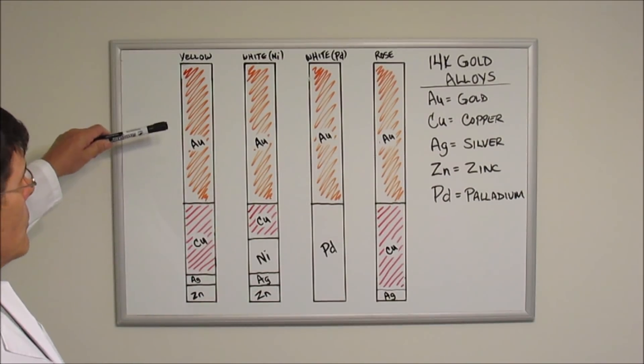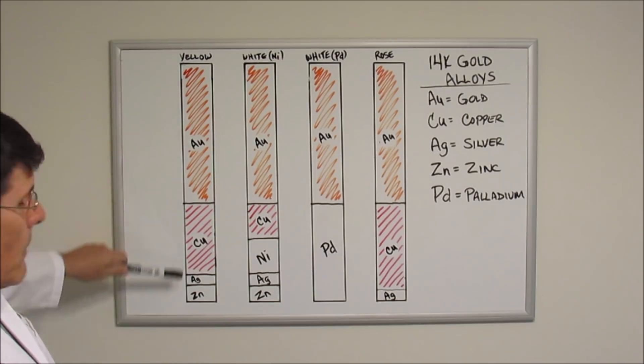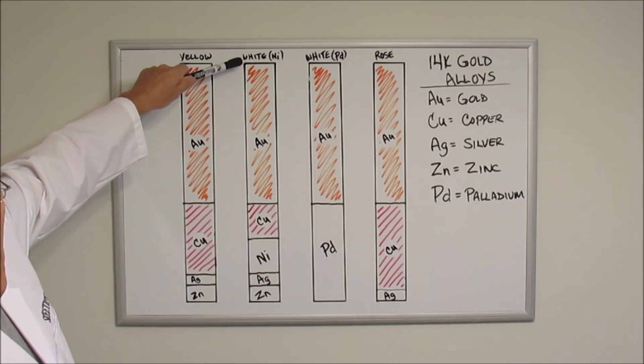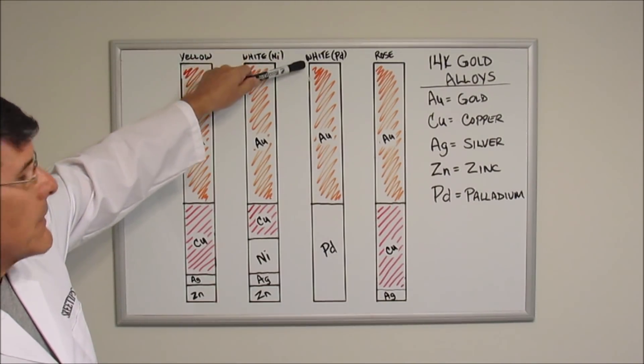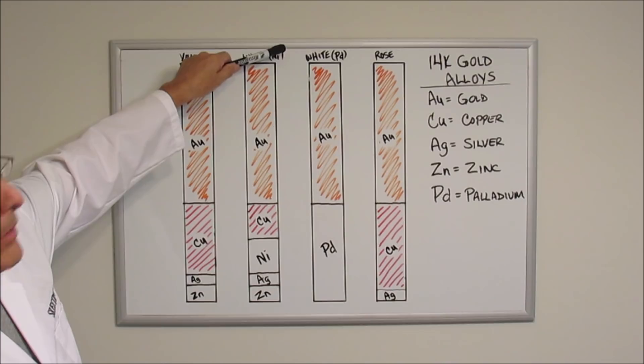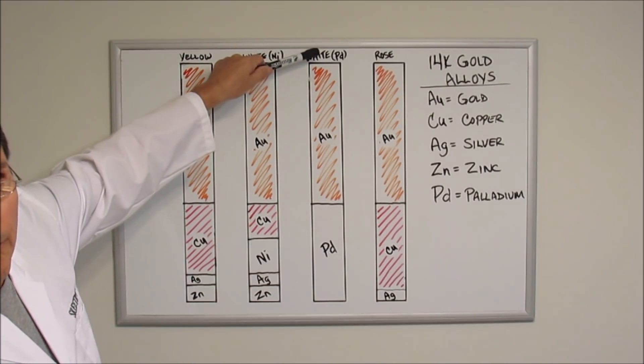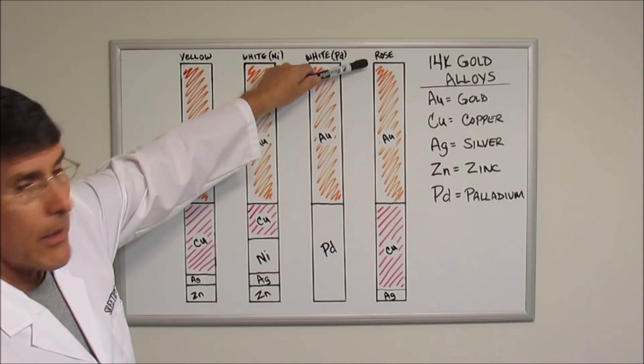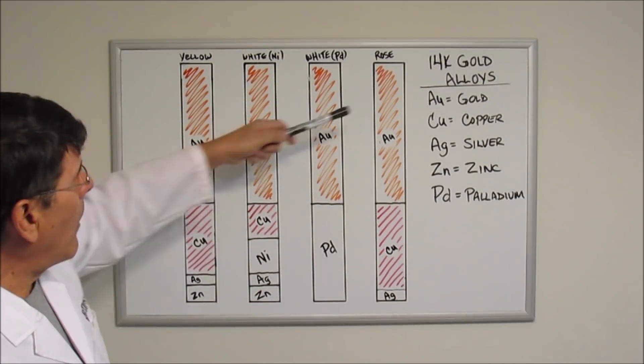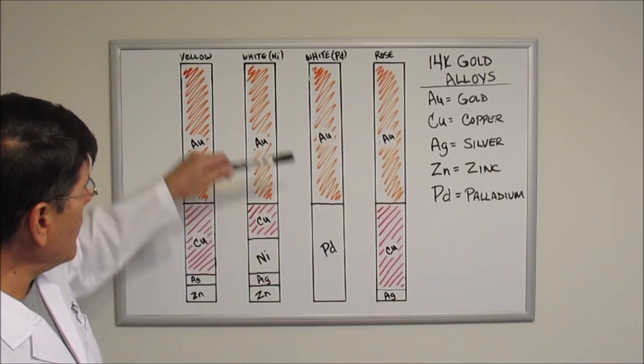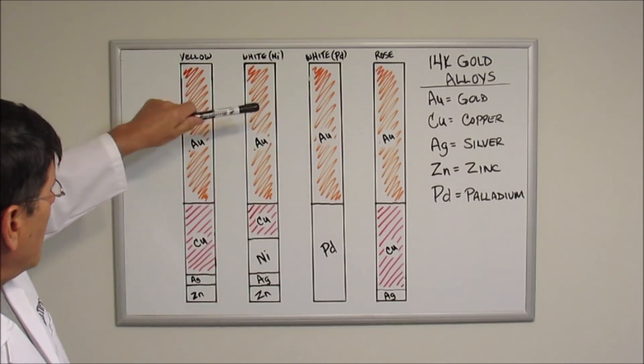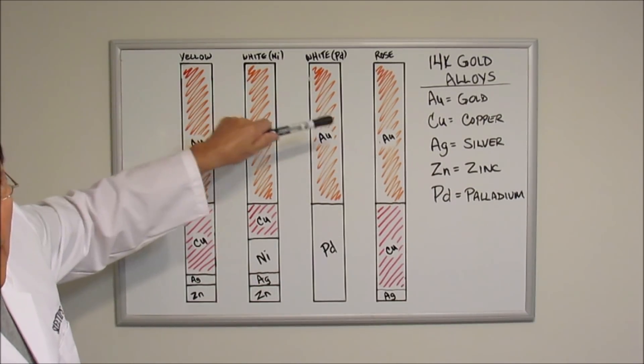I've got a column here called yellow gold, a column here called white gold alloyed with nickel, this column is white gold alloyed with palladium, and this last column here is rose gold. These are all 14k gold alloys. Each of these have the exact same amount of gold in them.